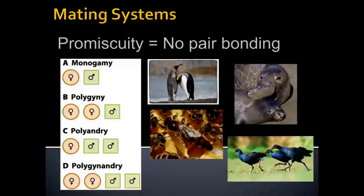Now that we've reviewed asexual reproduction and some of the variety that occurs there, let's look at sexual reproduction.